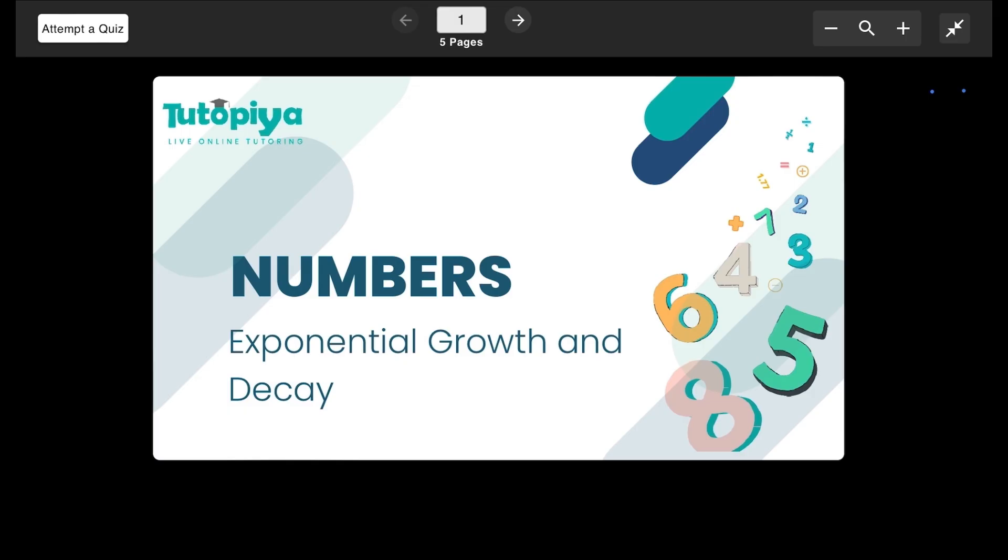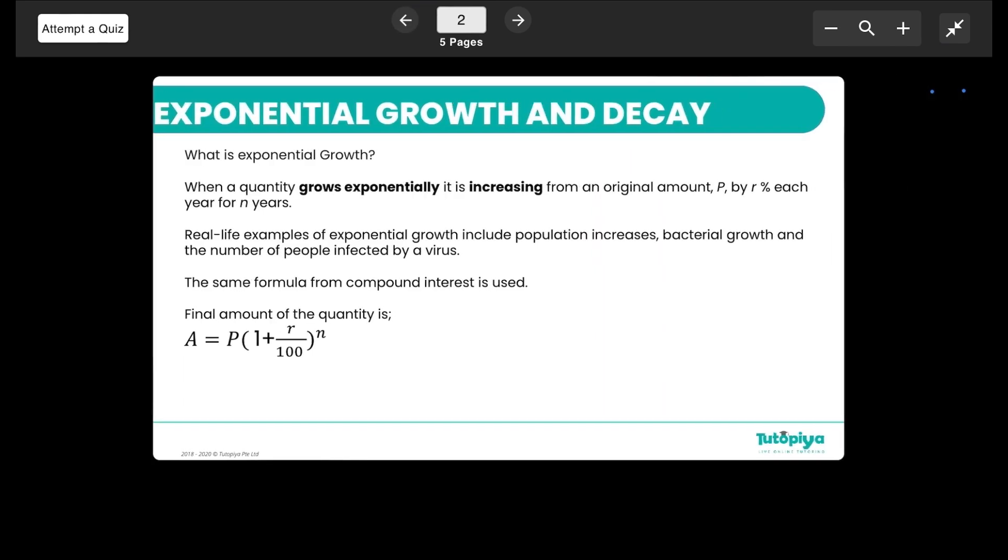Today we're focusing on Cambridge IGCSE Mathematics, the topic of number, the subtopic of exponential growth and decay. So to start off, what is exponential growth? When a quantity grows exponentially, it is increasing from an original amount with a particular ratio, like r percent, for n number of years.